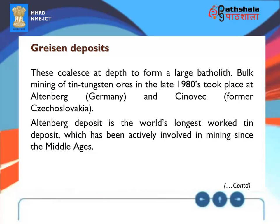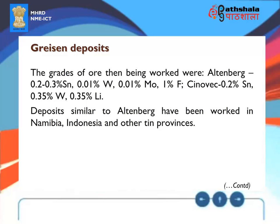These cupolas appear to form a large batholith. Bulk mining of tin-tungsten ores in the late 1980s took place at Altenburg, Germany, and Cinovec, former Czechoslovakia. The Altenburg deposit is the world's longest worked tin deposit, which has been actively involved in mining since the Middle Ages. Ore grades then being worked were: Altenburg — 0.2 to 0.3% tin, 0.01% tungsten, 0.01% molybdenum, 1% fluorine; Cinovec — 0.2% tin, 0.35% tungsten, 0.35% lithium. Deposits similar to Altenburg have been worked in Namibia, Indonesia and other tin provinces.